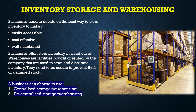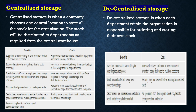A business can choose to use centralised or decentralised storage warehousing. Centralised storage is when a company chooses one central location to store all the stock for the organisation; the stock will be distributed to departments as required from the central warehouse. Benefits include: suppliers delivering to one location which reduces delivery cost; economies of scale gained due to bulk ordering; specialised staff employed to manage inventory, reducing theft and improving efficiency; standardised procedures implemented; centralised warehouses located near good infrastructure making them accessible; and reduced duplication of stock and administration cost.